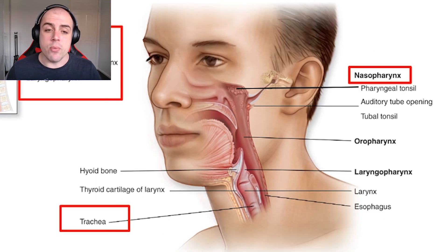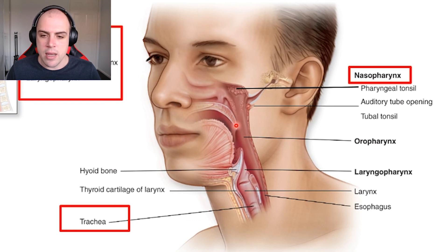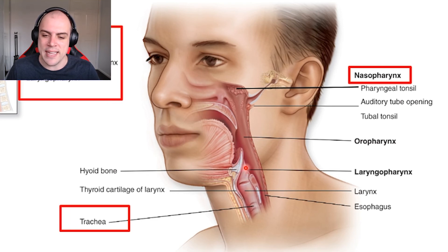To quickly recap: we've covered our nostril and nasal cavity. The air we breathe in moves through into our nasopharynx, then through our oropharynx and laryngopharynx. The air then moves from the laryngopharynx into our trachea. In our journey, we're about here.